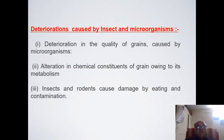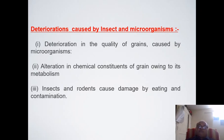Now we will discuss deterioration caused by different insects, microorganisms, and rodents. First, deterioration of quality of grain is caused by microorganisms. Second, alteration of chemical constituents of grain owing to their metabolism. Third, insects and rodents cause damage by eating and contamination — microorganisms deteriorate quality, chemical properties are changed due to metabolism of insects present in stored material, and portions are damaged by direct eating and contamination by urination.